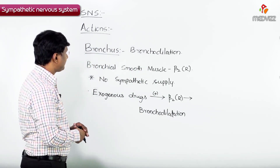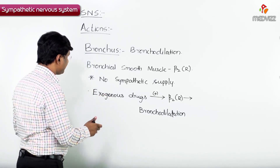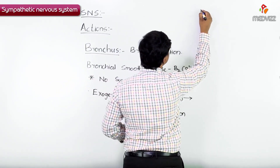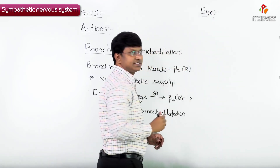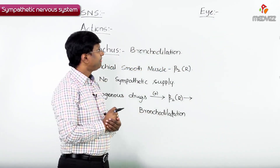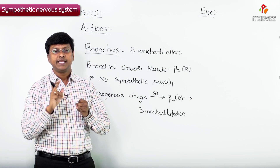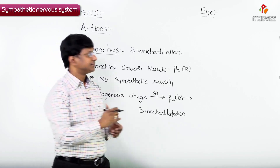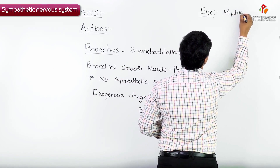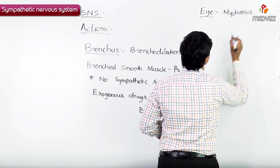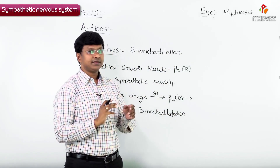Now let me discuss the effect of the sympathetic nervous system on the eye. The sympathetic nervous system will cause pupillary dilation, which is called mydriasis. Let me explain how it causes mydriasis.